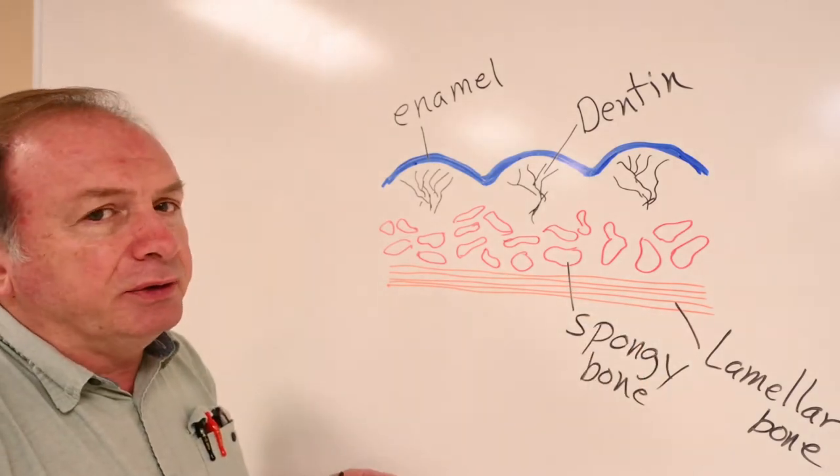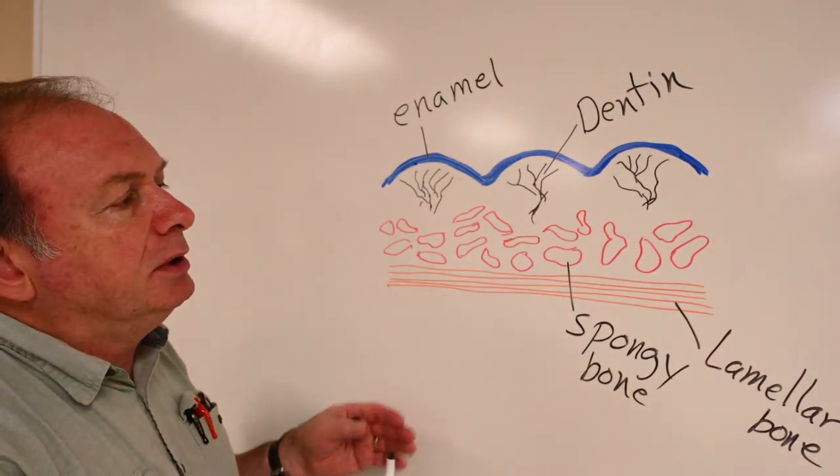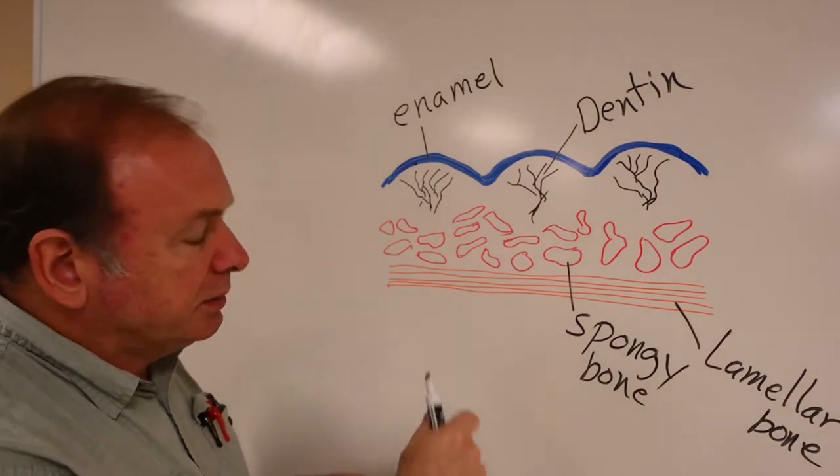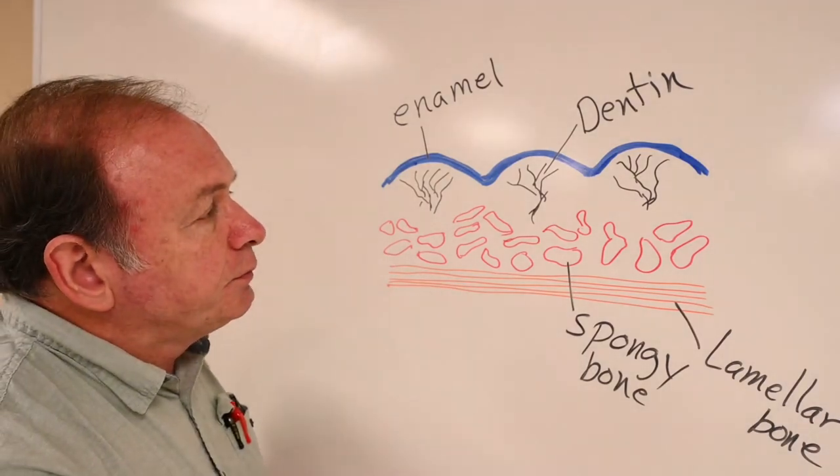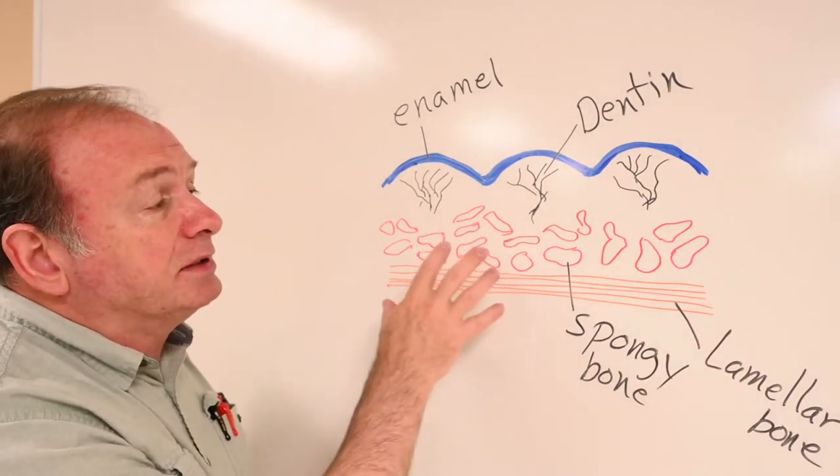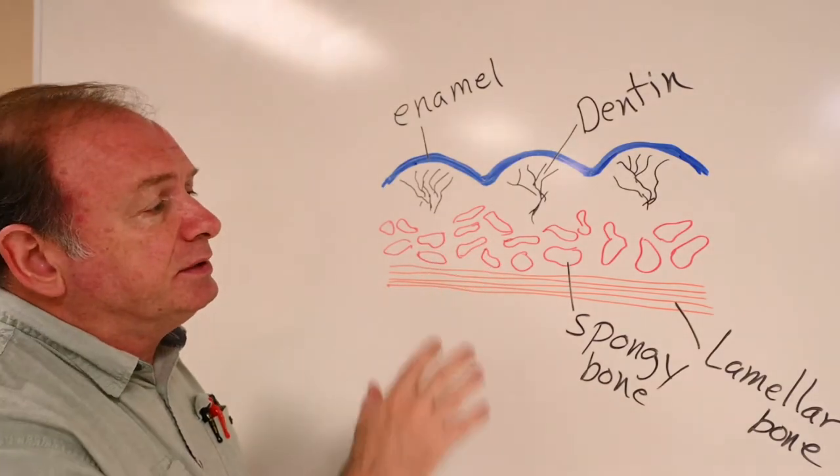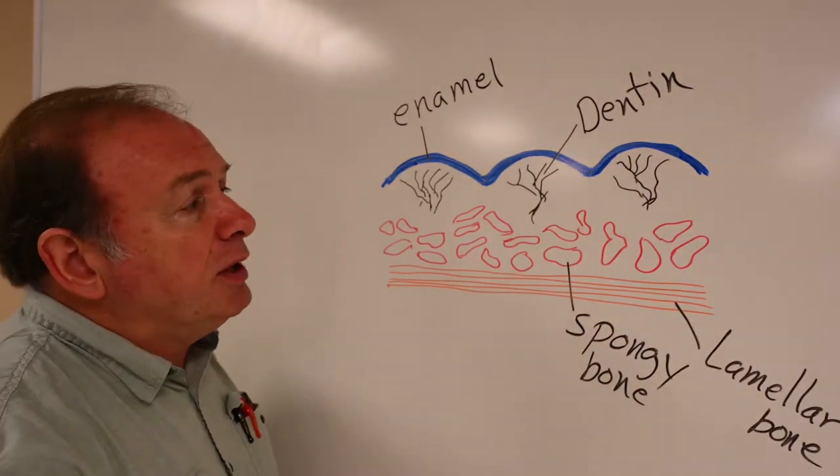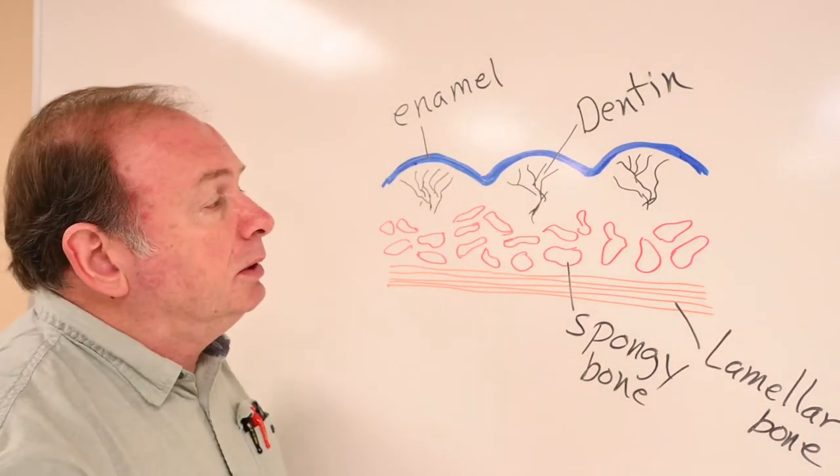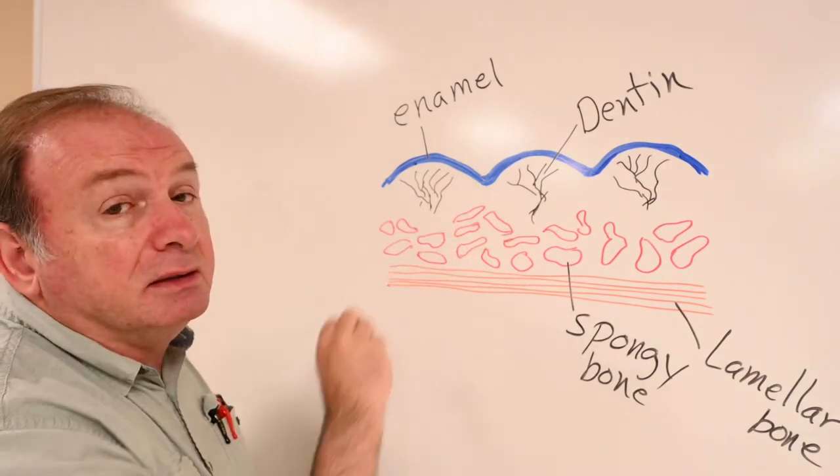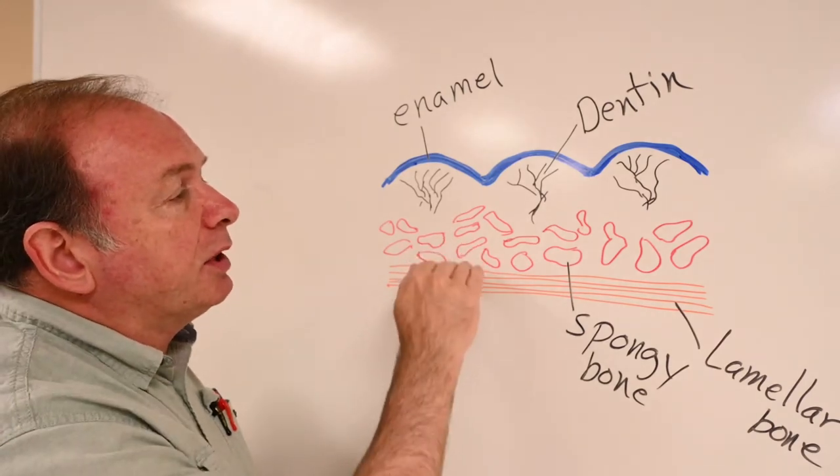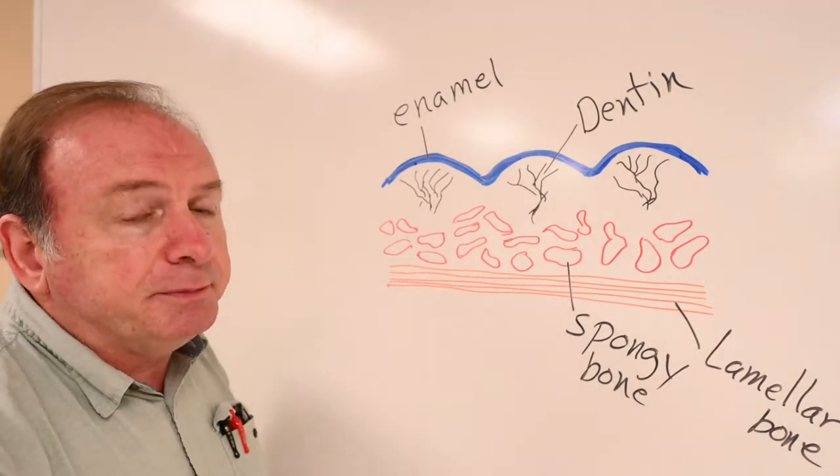The other scales that we look at that are dermal scales are going to be variations on this pattern. Next we're going to look at the other kinds of scales we see in modern fish. Nothing today has a scale with this complex arrangement of multiple layers. Everything else has less. All the modern fish have less. They might have some other components but not all four of these.